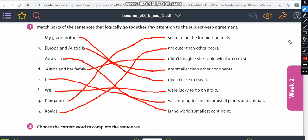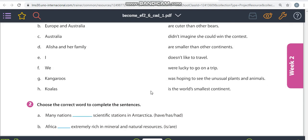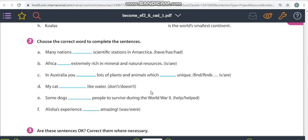Now, exercise two. Choose the correct word to complete the sentence. So I cannot write here. My pen is not so good. So I'm just going to correct it orally. So please pay attention. If necessary, we can go back in the video and listen again.